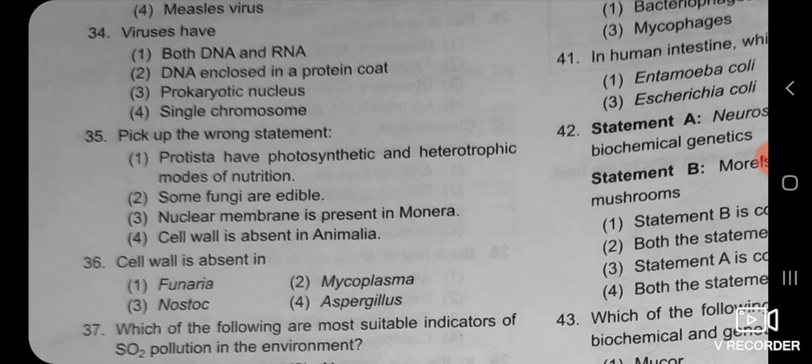The second option — DNA enclosed in a protein coat — is the correct answer, because in the structure of a virus we have seen that if the virus has genetic material DNA, it is not open or naked; it is always covered in a protein coat. That's why the second answer is correct. Prokaryotic nucleus is not correct because viruses are acellular — you cannot divide them into prokaryotic or eukaryotic.